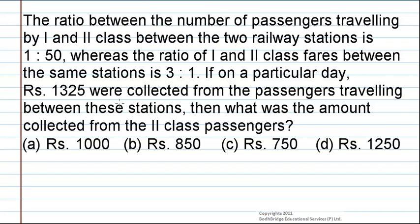The ratio between the number of passengers traveling by first class and second class between two railway stations is 1 is to 50, whereas the ratio of first and second class fares between the same stations is 3 is to 1. If on a particular day, rupees 1325 are collected from the passengers traveling between these stations, then what was the amount collected from the second class passengers? The options are 1000 rupees, 850 rupees, 750 rupees or 1250 rupees.